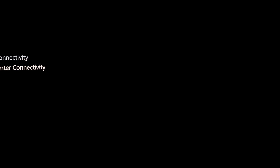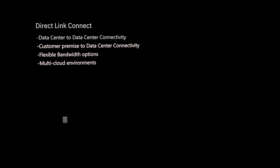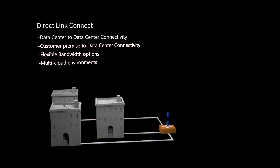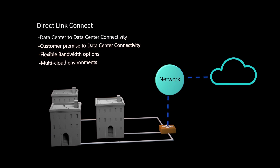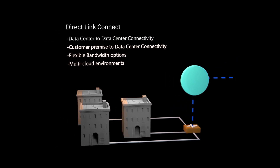For data center to data center connectivity, or customer premise to data center connectivity, there is Direct Link Connect. IBM Cloud Direct Link Connect enables multi-cloud connectivity and offers flexible bandwidth options, while providing a lower cost entry point for IBM Cloud's network customers.